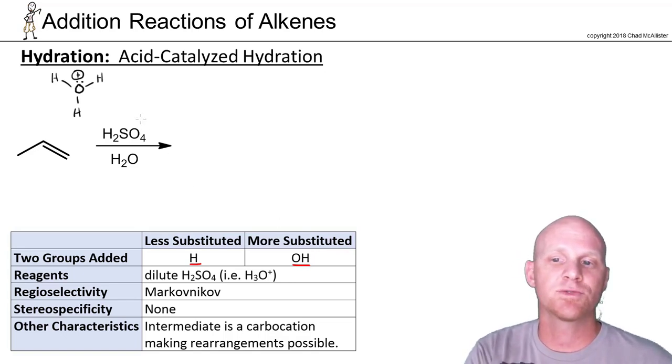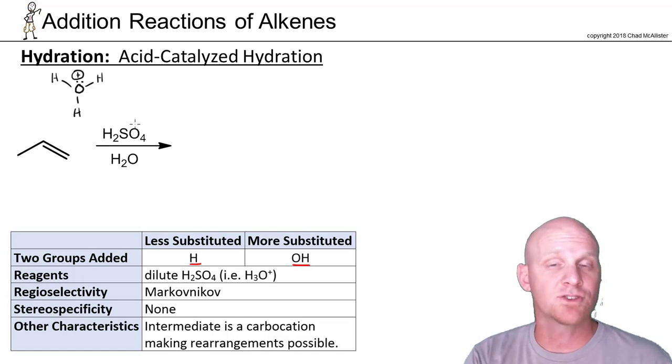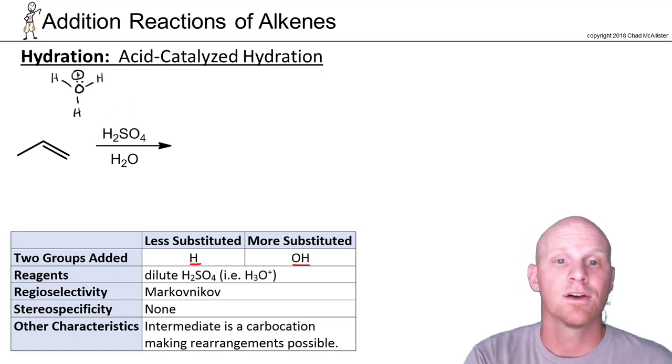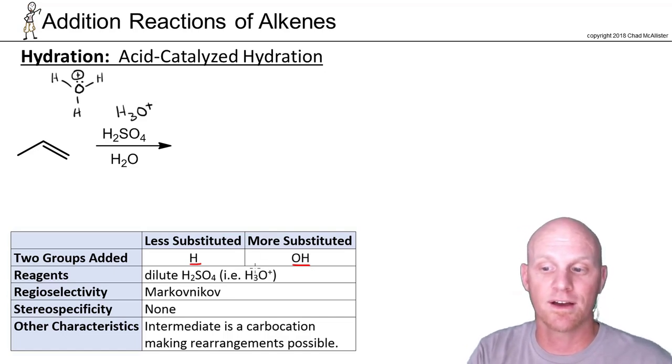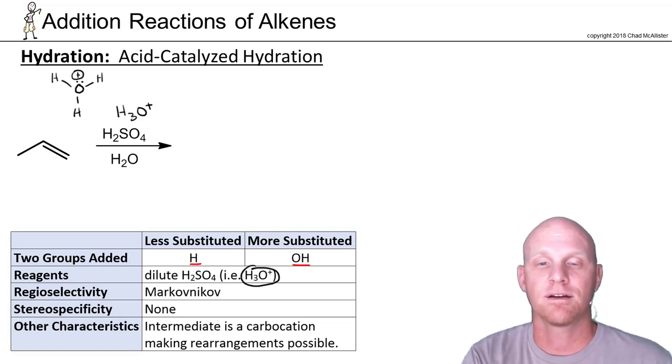In the acid-catalyzed hydration, we typically add a strong acid H2SO4 with water. H2SO4 is by far the most common strong acid we use here. You should know that when you add H2SO4 in water, it dissociates completely to form H3O+. So technically, if you just see simply H3O+ written over the arrow, you should treat it the same way. You might see it that way as well, and that's why I kind of highlighted that here on the table.